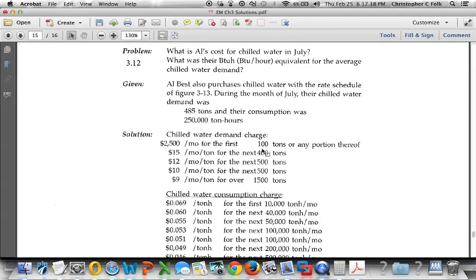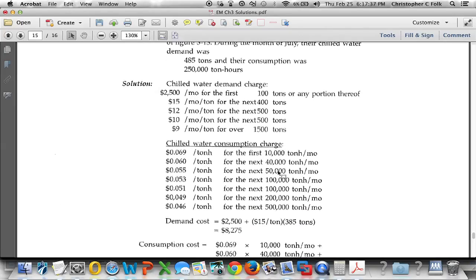Here's the demand charge. First 100 tons, or any portion, is going to be 2,500 dollars. So 2,500 bucks for the first 100 tons. That leaves how many tons left over? 385. So we'll use $15 a ton for the next 385 tons. So that's a pretty easy one. We multiply those together.